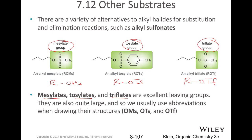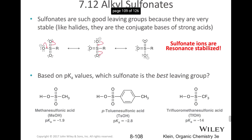Why would these make such good leaving groups? Sulfonates are such good leaving groups because they are very stable — just like a halide, like a chloride, bromide, or iodide — because they are the conjugate bases of strong acids. If you remember sulfuric acid, which is a very strong acid, these sulfonate acids are not too far away from that structure. Methane sulfonic acid has a pKa of −1.9, and para-toluene sulfonic acid has a pKa of −2.8.